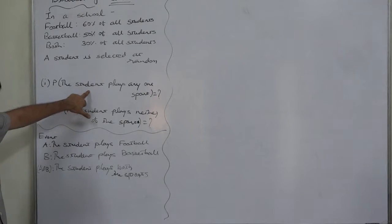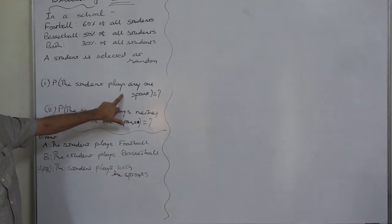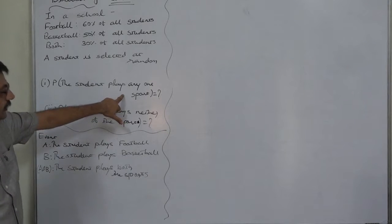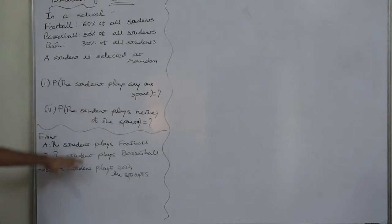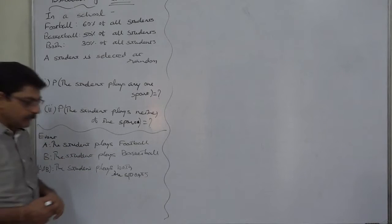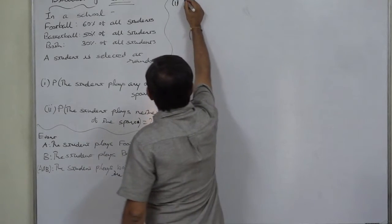So we can say that this is the case of union of the two events: either the student plays football or the student plays basketball. So the first is a simple case of union.